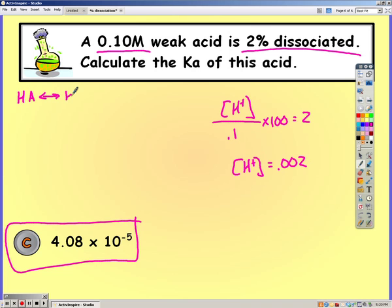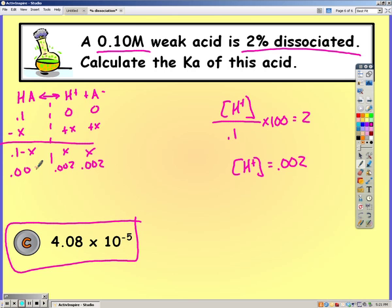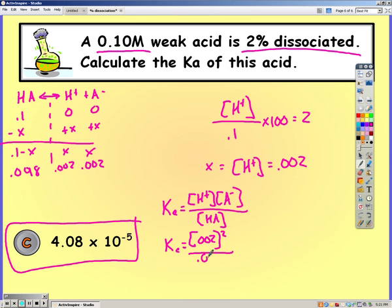Now setting up our ice table, filling in our X, which was 0.002, and finally plugging that into our Ka expression. And solving it is how we get C.